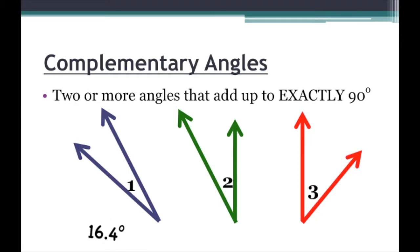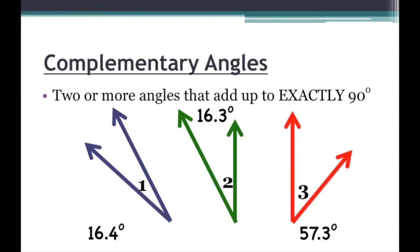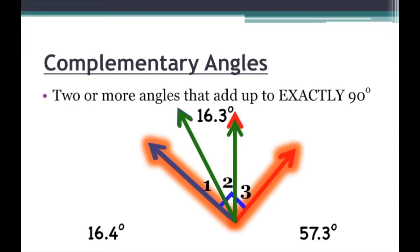For example, angle 1 is 16.4 degrees, angle 2 is 16.3 degrees, and angle 3 is 57.3 degrees. It's not really drawn to scale — what I want you to really focus on is the numbers. So if we put the three together, we have a right angle. Therefore, angles 1, 2, and 3 are all complementary angles because they add up to 90 degrees.